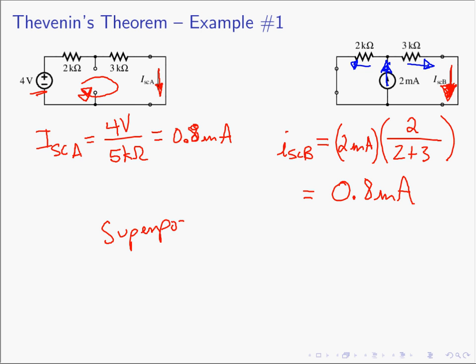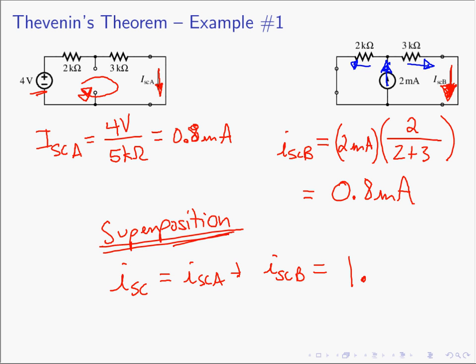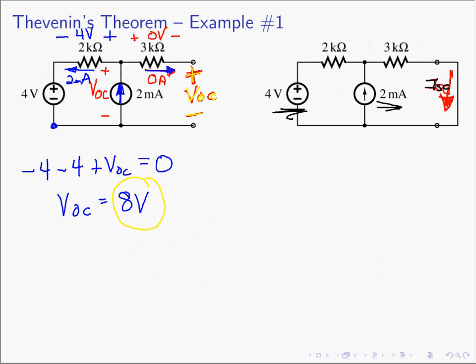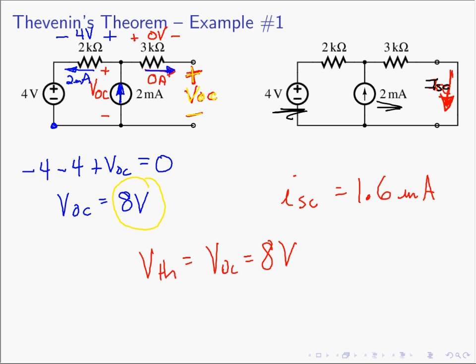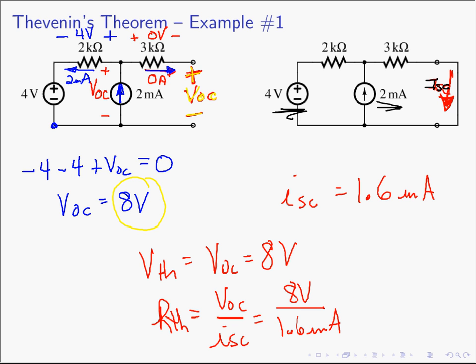Superposition says I can find the total by adding the sub-responses due to each source and adding them up. So I_short_circuit equals I_SC_A plus I_SC_B, giving 1.6 milliamps. Going back, V_Thevenin equals VOC which is 8 volts, and R_Thevenin equals VOC over ISC, which is 8 volts divided by 1.6 milliamps, and that equals 5kΩ.